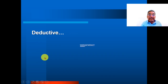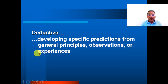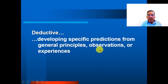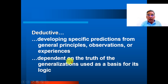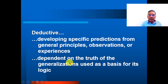Next, deductive. In deductive reasoning, we develop specific predictions from general principles, observations, or experience. It depends on the truth of the generalization used as the basis for its logic. So there are two types: inductive and deductive.